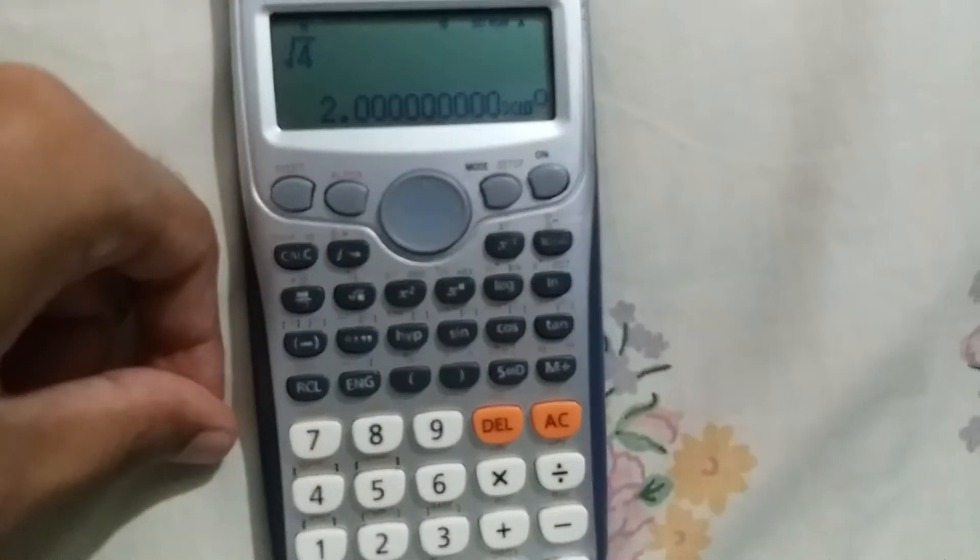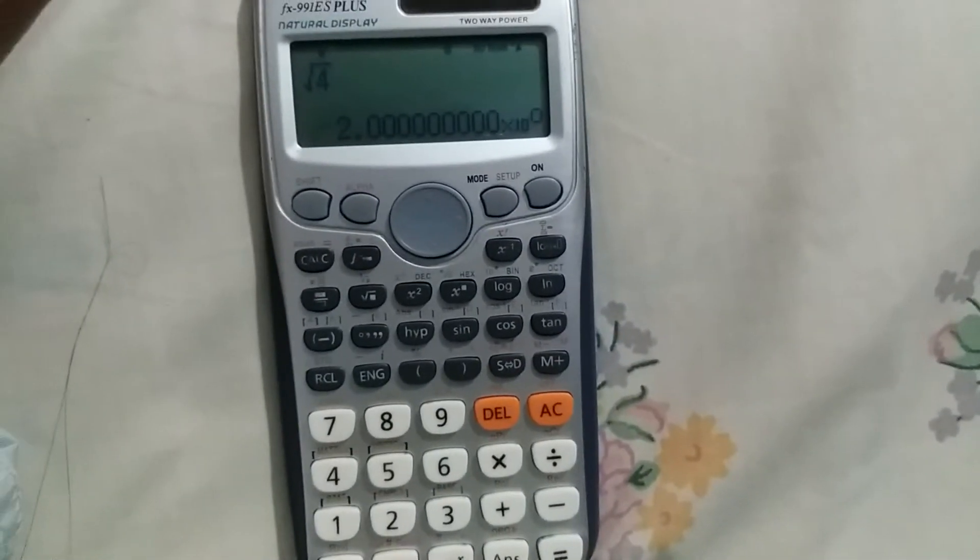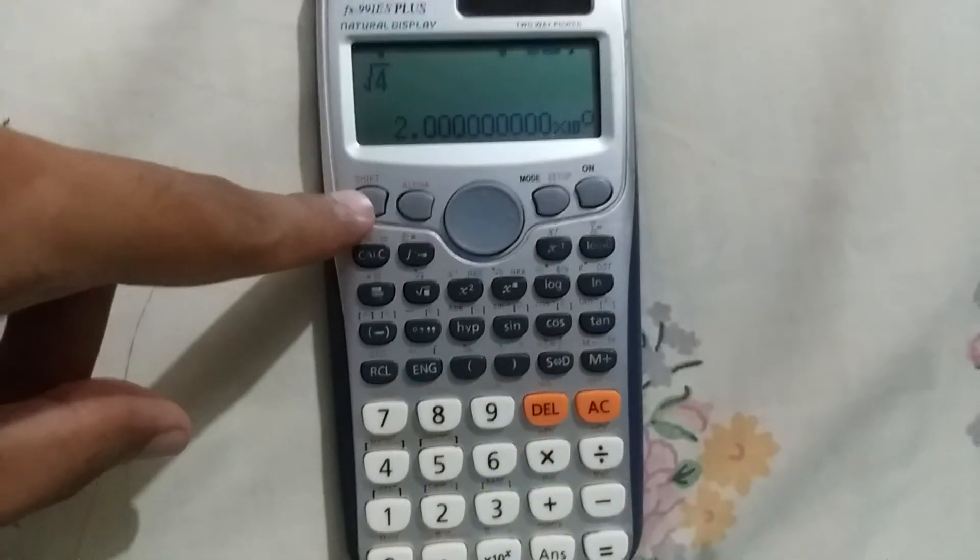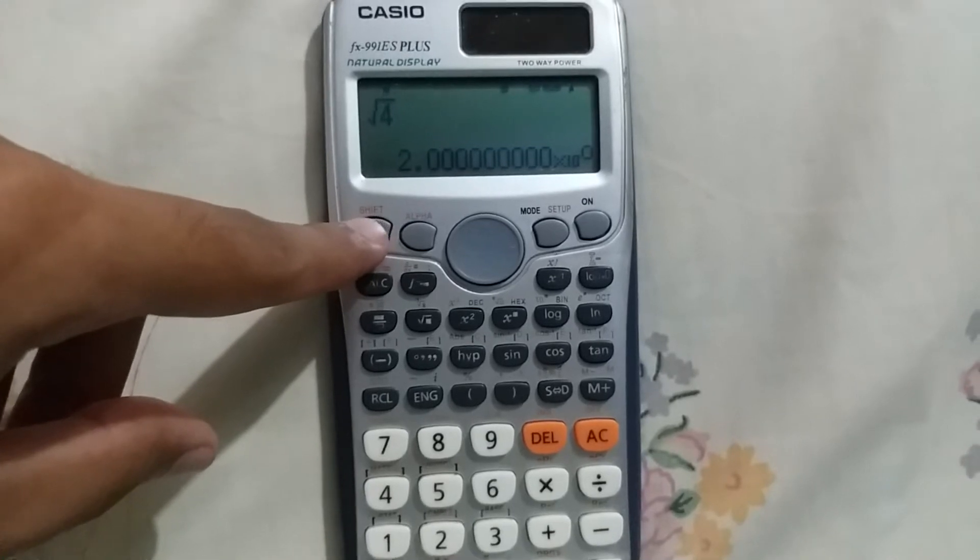You can convert your scientific calculator from any mode to normal mode. To do that, simply press the shift button of your scientific calculator.